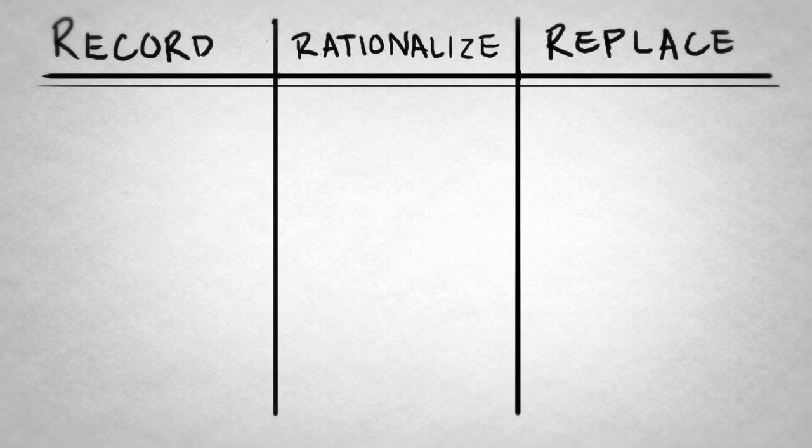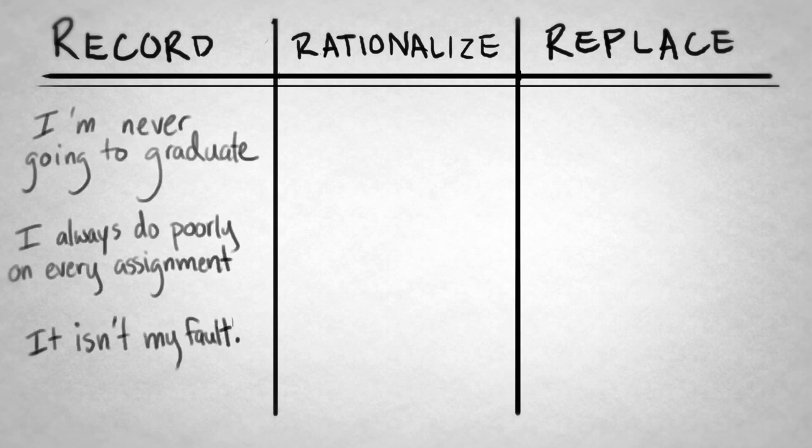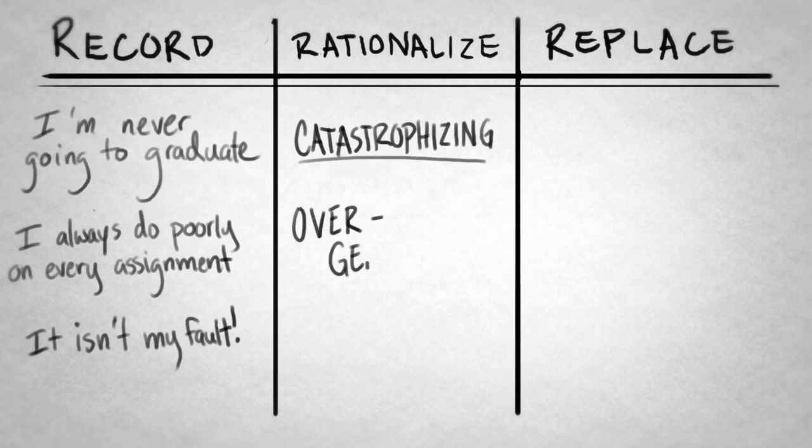In column 1, write down each AT you had about the upsetting event. For example, I am never going to graduate. In the second column, try and label each distortion.